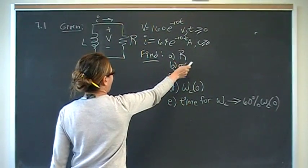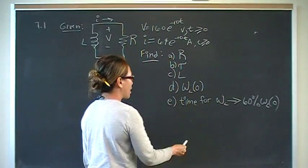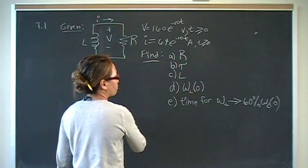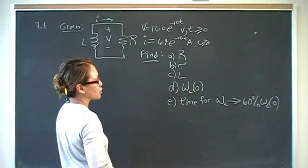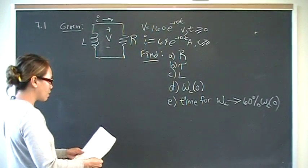And we want to find R, tau, L, energy at time zero, and the time for the energy in the inductor to dissipate 60% of the initial stored energy. So here we go.